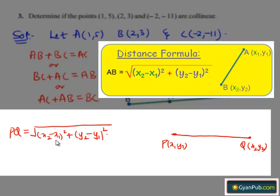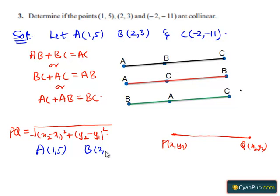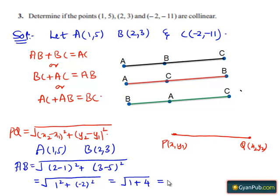Let us consider the first two points A(1,5) and B(2,3) and calculate the distance between them. By the distance formula, AB = √[(2−1)² + (3−5)²] = √[1² + (−2)²] = √[1 + 4] = √5. Hence, the distance AB = √5 units.